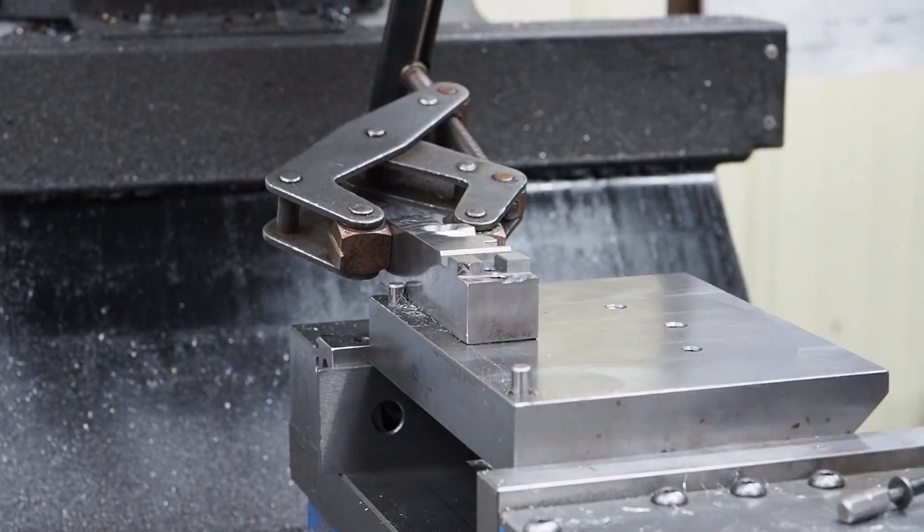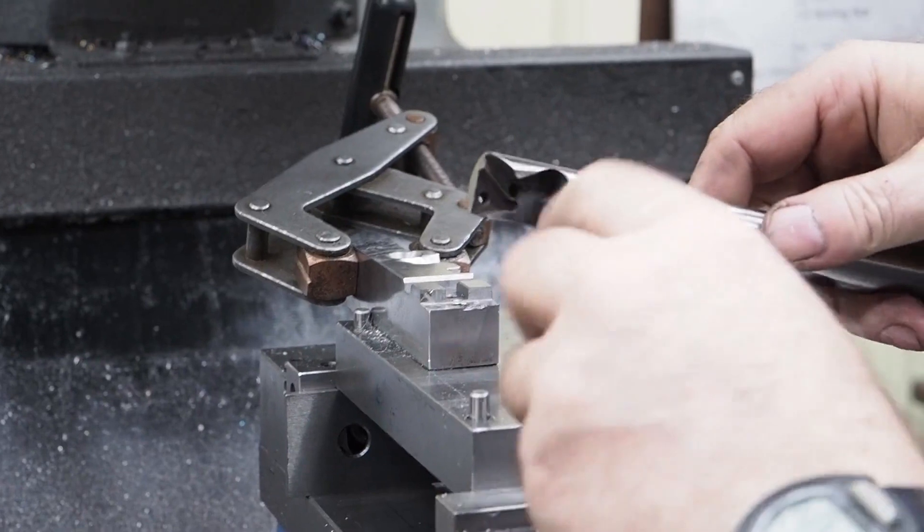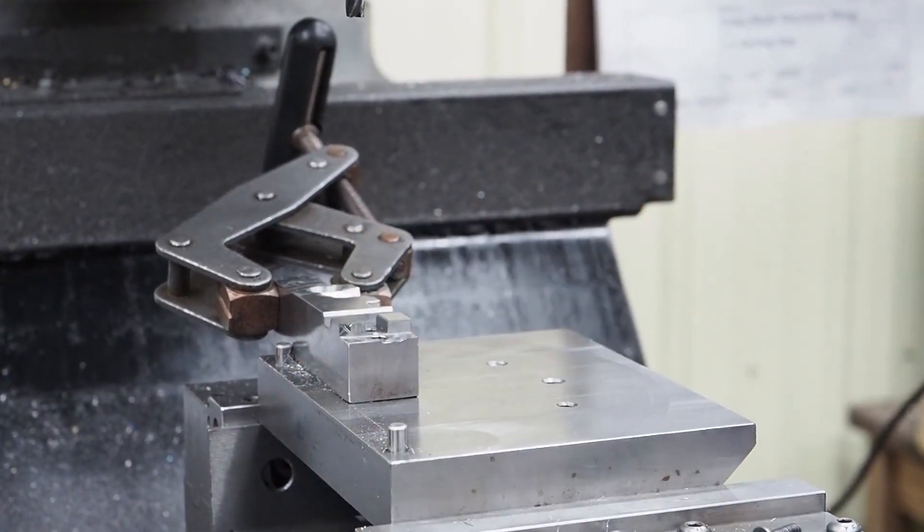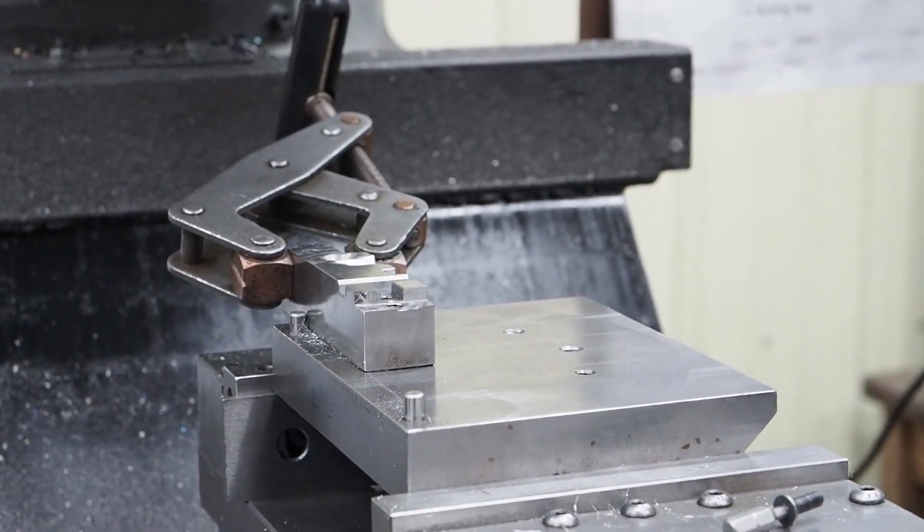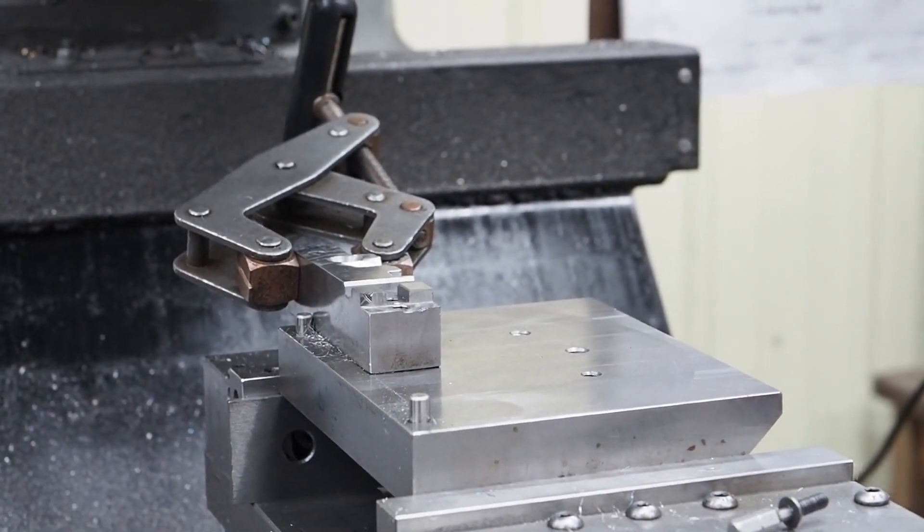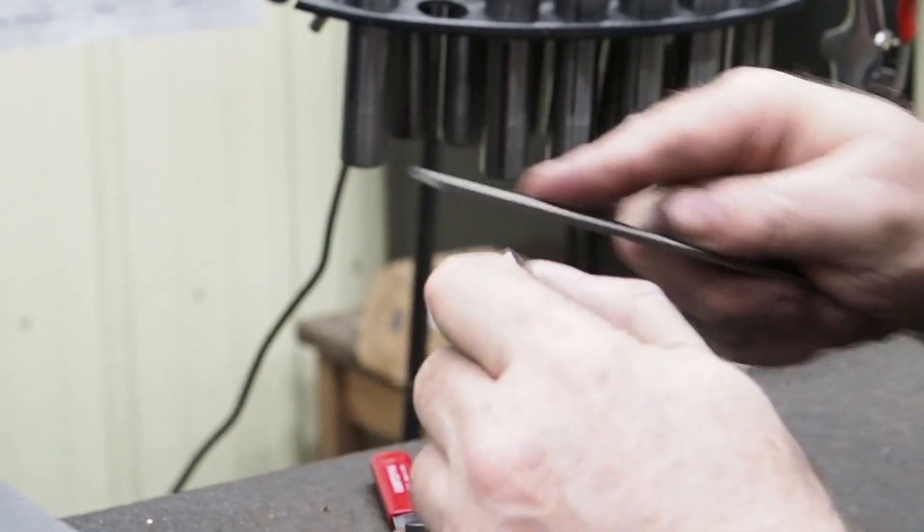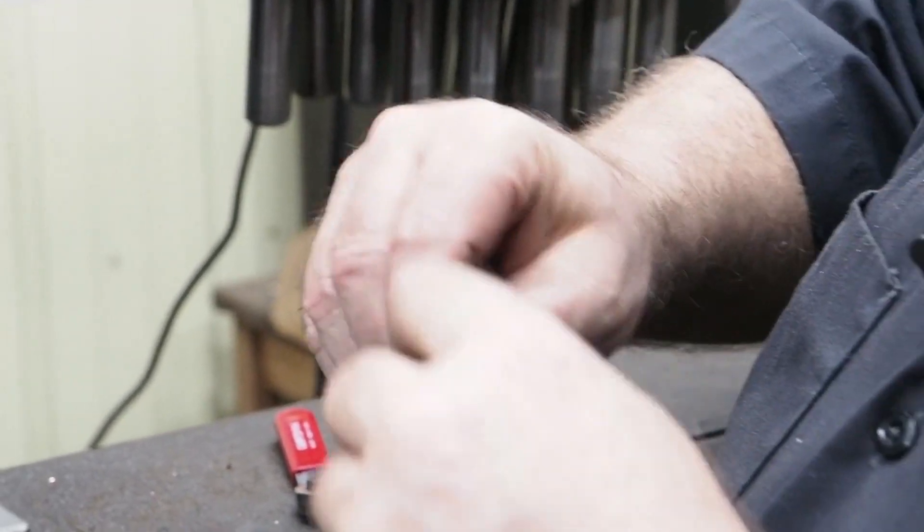What this radius is for is so that you have a radius in the pocket here that gives you the clearance that you need back there. What I'll do is I'll just take the burrs off. But when I'm doing these in production, I just do them all and then deburr them all on a Scotch-Brite.